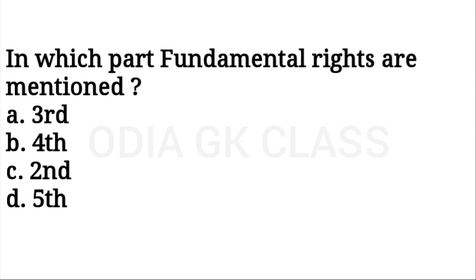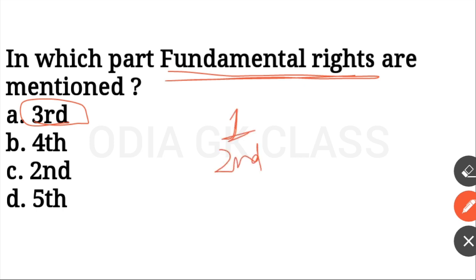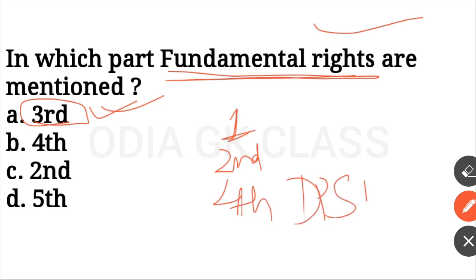In which part of the Constitution are fundamental rights mentioned? Part I covers the Union and Territory; Part II covers Citizenship; Part III covers Fundamental Rights; Part IV covers Directive Principles of State Policy (DPSP); Part IVA covers Fundamental Duties.